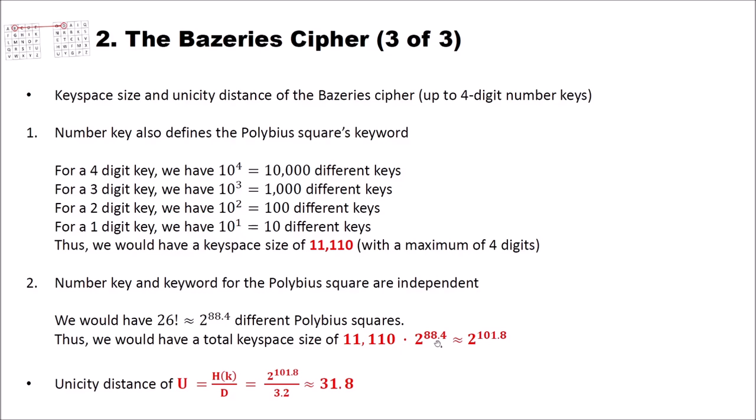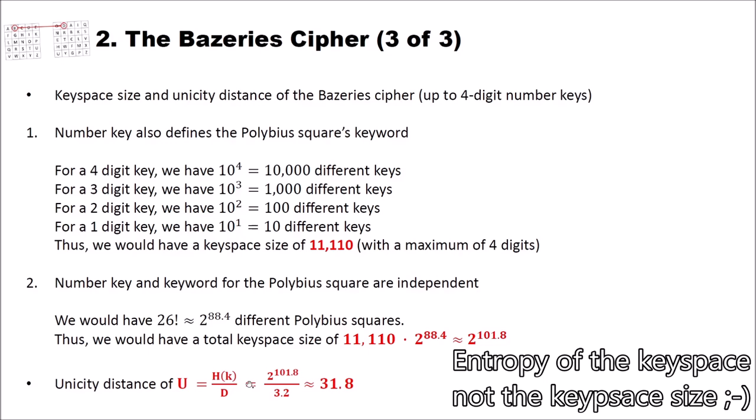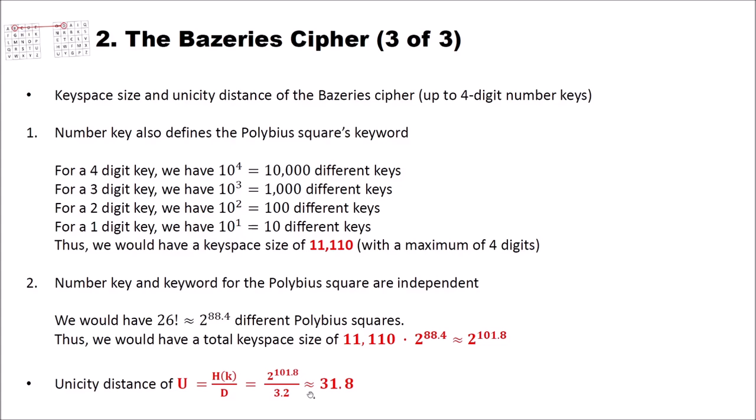And this is our key space size for the more difficult case. Now let's have a look at the unicity distance. Remember, the unicity distance is the minimum length of ciphertext that we have to have, so that when we perform cryptanalysis there is only one valid solution. The unicity distance can be computed by dividing the entropy of the key space size by the redundancy of the language. In our case, the entropy of the key space size is 101.8 divided by 3.2. And this is about 31.8. That means we need a minimum number of 32 letters in the more difficult case to obtain only a single and the correct solution via cryptanalysis.